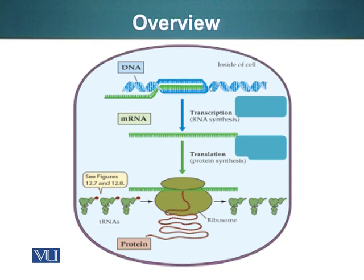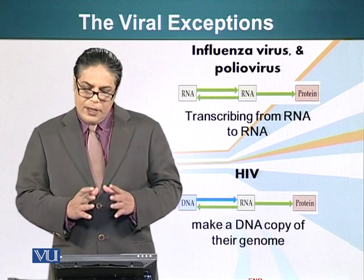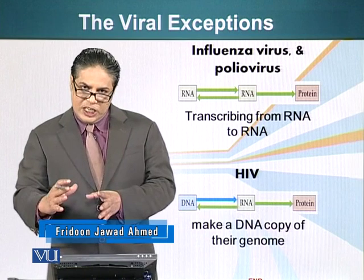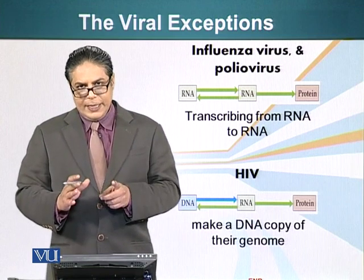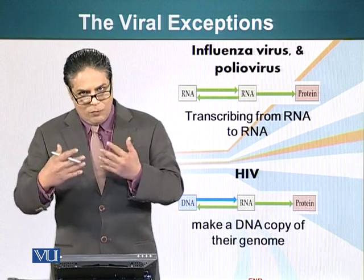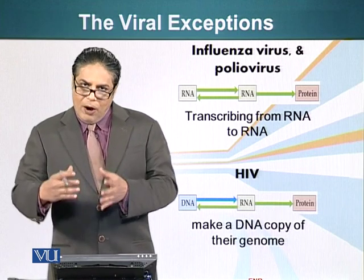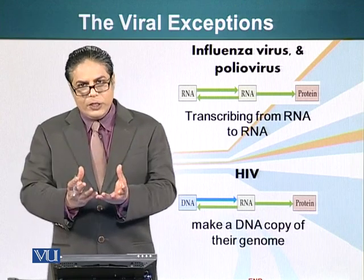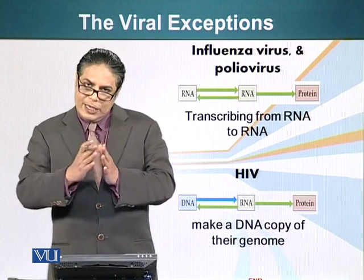It is pertinent to mention the exceptions to the central dogma. There are viruses that are exceptions to the rule of DNA containing information, that information getting converted into RNA and ultimately being translated into protein. For example, influenza and poliovirus — their genetic material is not DNA, it is an RNA molecule. When these viruses infect a cell, that RNA molecule makes many copies of itself and also makes RNA that can be translated into viral proteins, which are required to contain the nucleic acids that hold the genetic information.